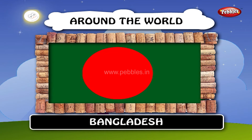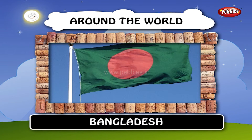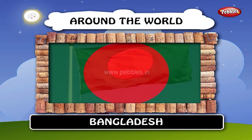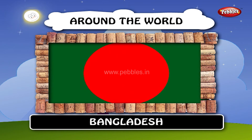Bangladesh — the national flag of Bangladesh was adopted officially on January 17th, 1972. A red disc is on top of the green field, offset slightly towards the hoist, so that it appears centered when the flag is flying. The red disc represents the sun rising over Bengal, and also the blood of those who died for the independence of Bangladesh.